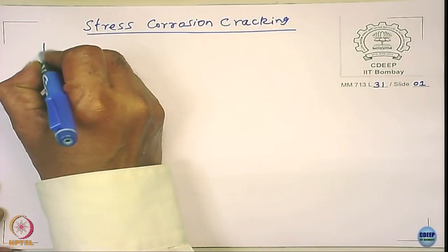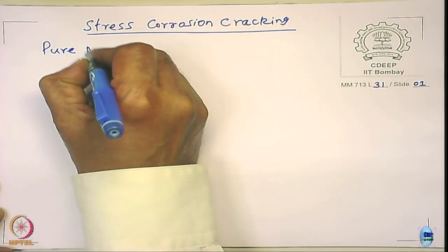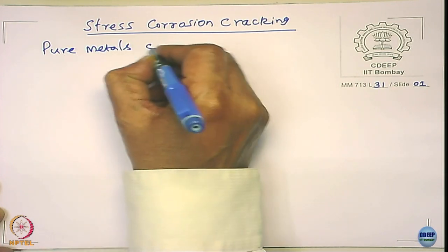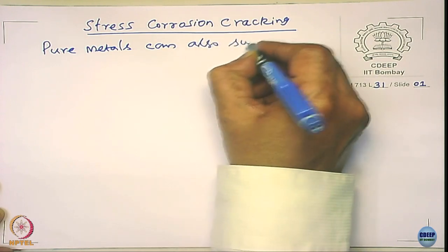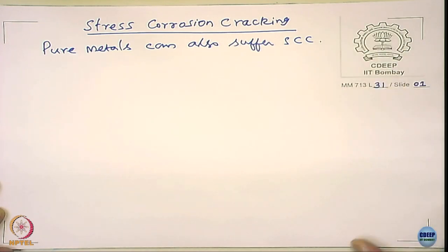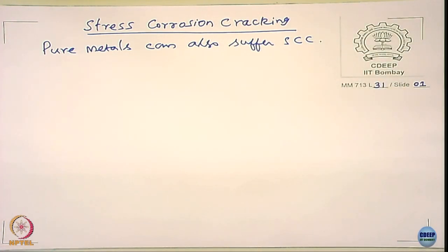You also see similar things happening in copper-based alloys. Pure copper is relatively resistant against stress corrosion cracking. Earlier there was an understanding that pure metals do not undergo SCC, but it has been shown that pure metals can also suffer SCC. Pure copper and pure aluminum do suffer stress corrosion cracking, but the susceptibility index is not as severe compared to alloys.